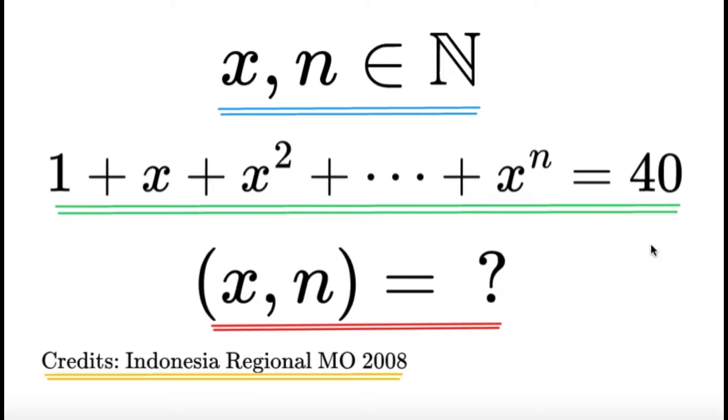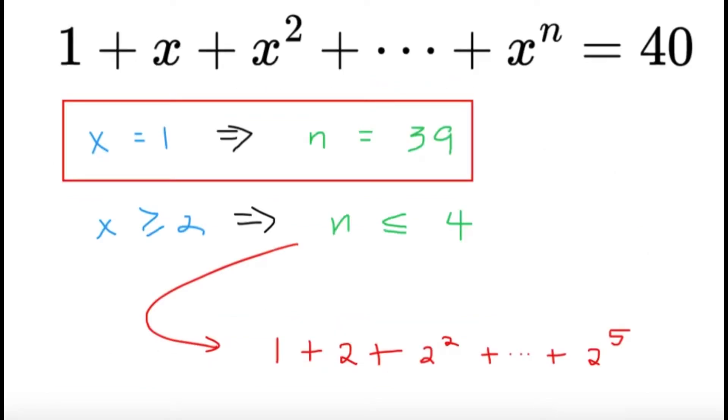For example, maybe we want to take the case where x equals 1 because that's going to be one of the obvious solutions. Well, if x equals 1, then the left hand side is just going to be a sum of 1s. And it's pretty obvious for us to see that n must be equal to 39. This already produces one ordered pair, 1 comma 39.